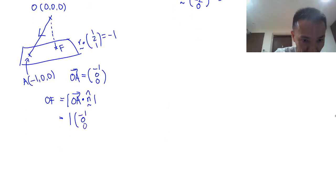(-1,0,0) dot (1/√6)(1,2,1). In the end you get 1/√6.